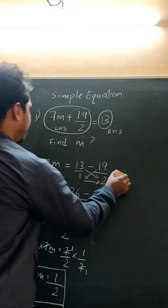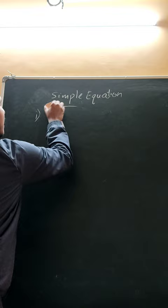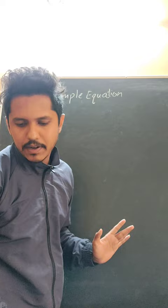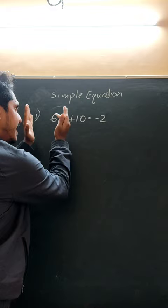We will go with the next example. The equation is: 6Z plus 10 is equal to minus 2. We need to find the value of Z. To isolate Z, we need to take the term 10 to the RHS side.